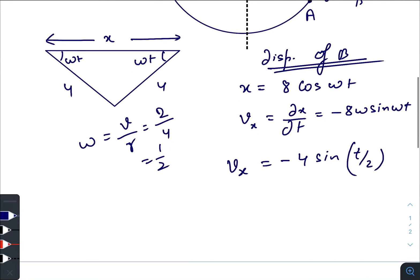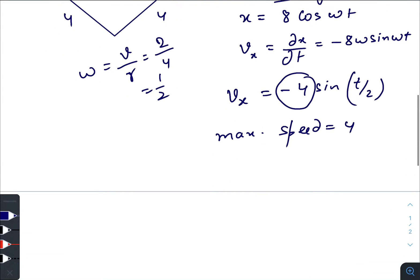As you can see, the maximum speed is 4. Now if I find the acceleration, it becomes -2 cos(t/2), so maximum acceleration is 2.